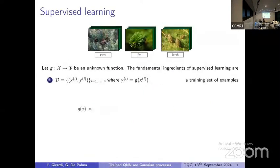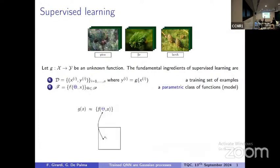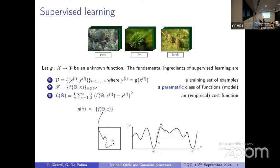To fix the notation, I will recall the general problem of supervised learning, in which there is an unknown relation that we want to study — for example, the correct labeling of some pictures. We don't want to write down explicit algorithms for a specific function g, but we want to learn starting from examples. The first ingredient is a training set with examples of correct labeling. The second ingredient is a parametric class of candidate functions to imitate g. To select the best function in this family, we define a cost function — here we consider the quadratic one — and we try to minimize it, i.e., we minimize the error on the training set.